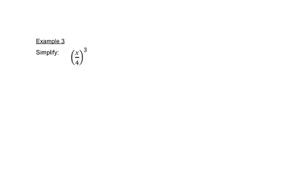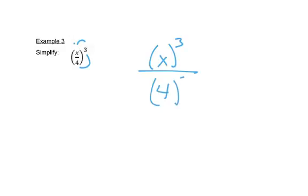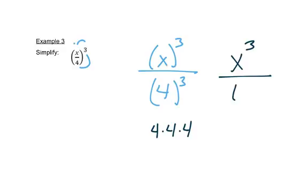Just like when we did multiplication, we had an exponent outside the parentheses. This exponent has to go to everything inside the parentheses. So we really have x to the 3rd over 4 to the 3rd. The x to the 3rd is on top, and 4 to the 3rd really means 4 times 4 times 4, which is 64.